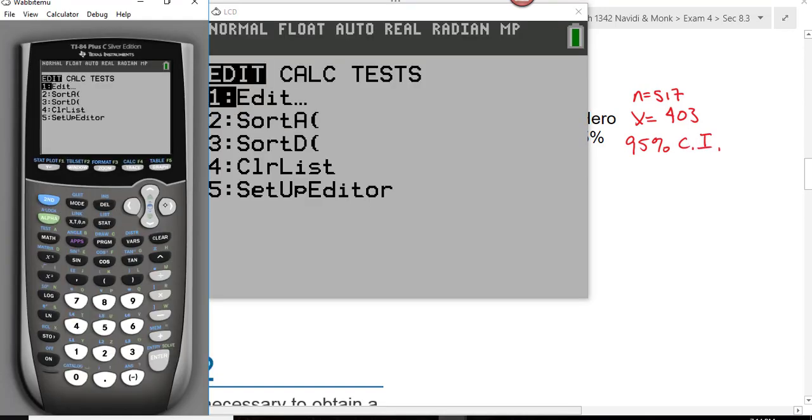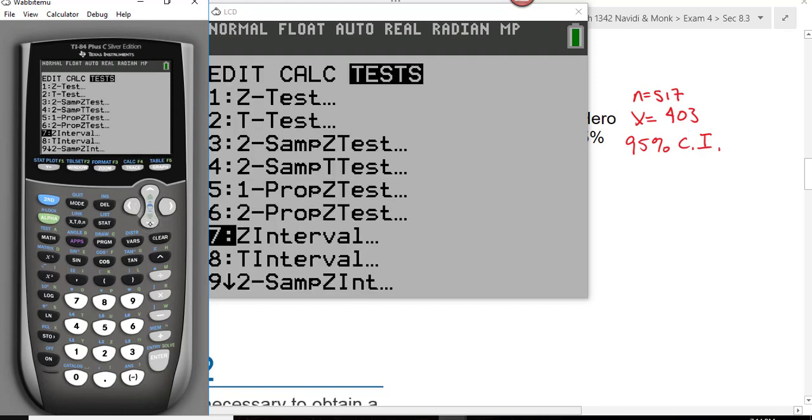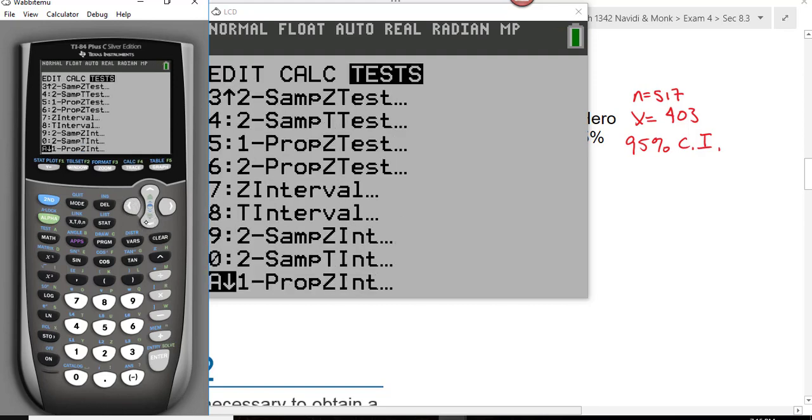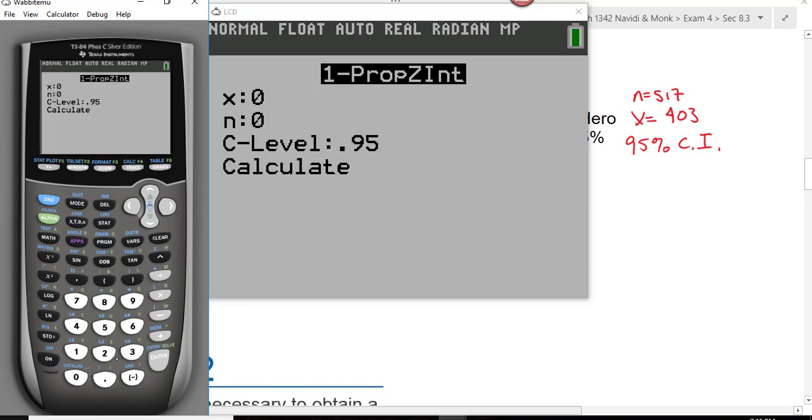We hit stat, go over to tests, scroll down till you see one prop Z interval. On my calculator, it's letter A. Select that.